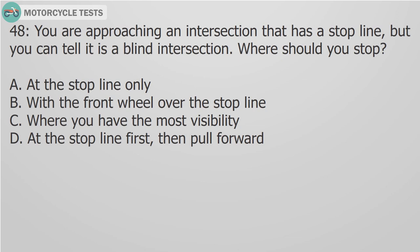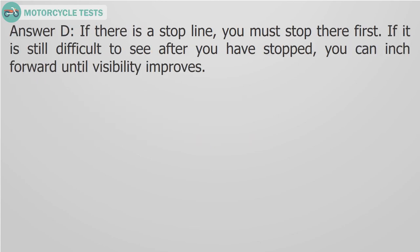Question 48. You are approaching an intersection that has a stop line, but you can tell it is a blind intersection. Where should you stop? A. At the stop line only. B. With the front wheel over the stop line. C. Where you have the most visibility. D. At the stop line first, then pull forward. Answer D. If there is a stop line, you must stop there first. If it is still difficult to see after you have stopped, you can inch forward until visibility improves.